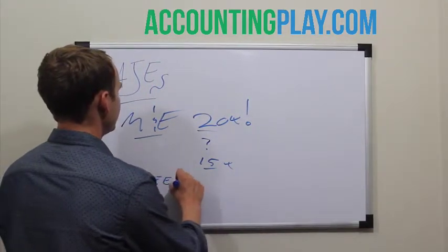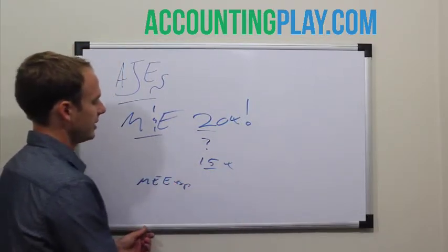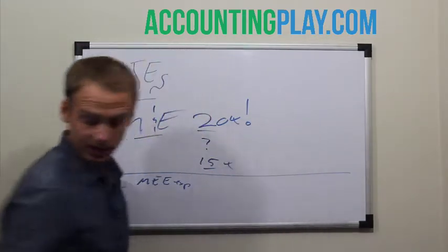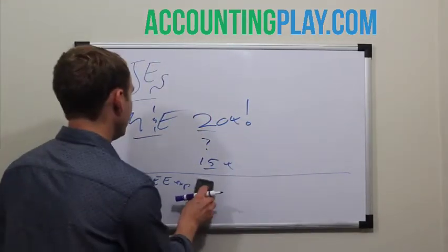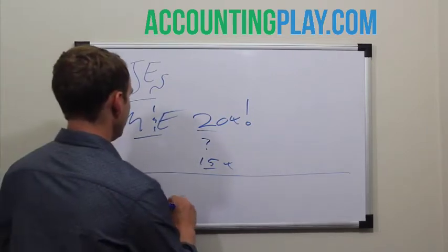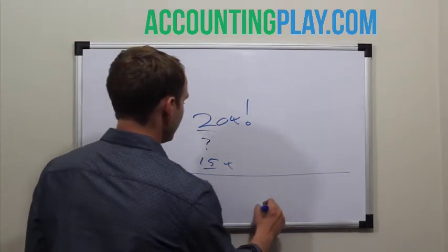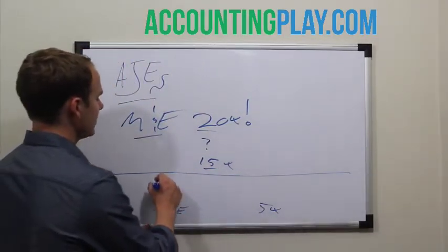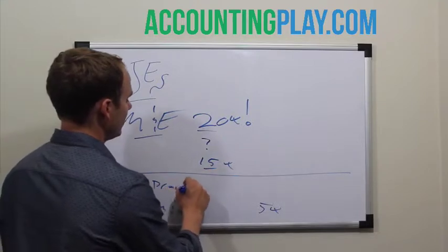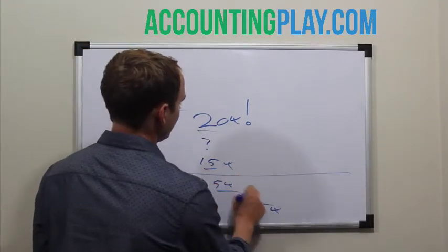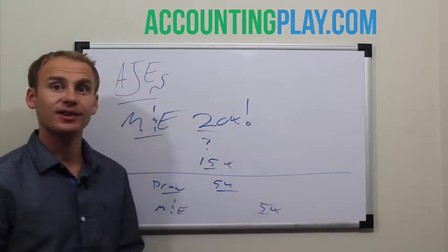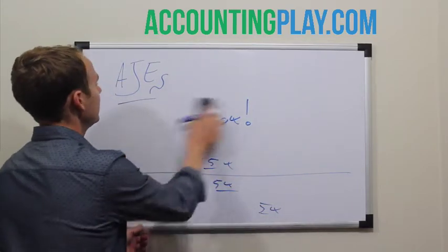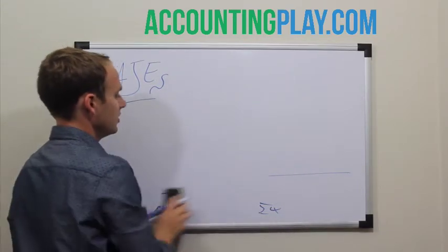So M&E expense, to reduce an expense, would be the opposite of what's normal, which would be a credit. So meals and entertainment, we'd reduce an expense by $5,000 and then you'd have an offset. In this case, maybe it's a draw account or something, $5,000 there. So in essence, you're being able to adjust the books manually using journal entries.